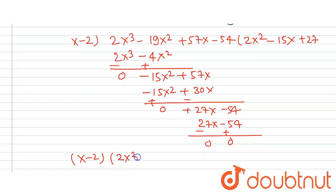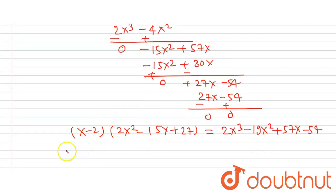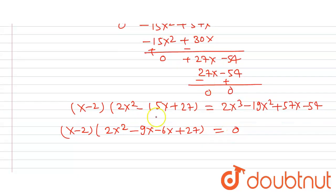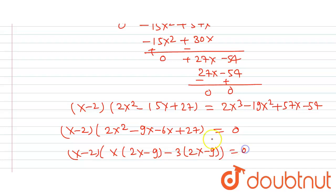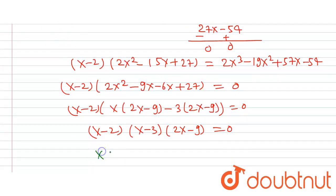After division, we get the quotient 2x² minus 15x plus 27. Factorizing the full expression: (x minus 2)(2x² minus 15x plus 27) equals zero, which factors as (x minus 2)(x minus 3)(2x minus 9) equals zero. So the three roots are x equals 2, x equals 3, and x equals 9/2.